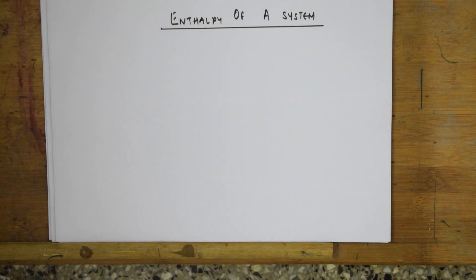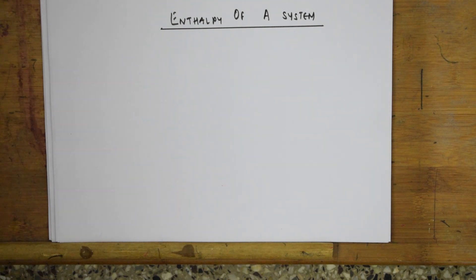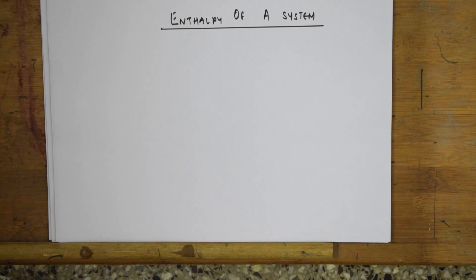Welcome students to one more session of thermodynamics. We are almost coming to the end of the chapter. Today the topic we are going to discuss is enthalpy of a system. We have already done enthalpy, but what is different today is that we are going to study about the different types of enthalpies of reaction.